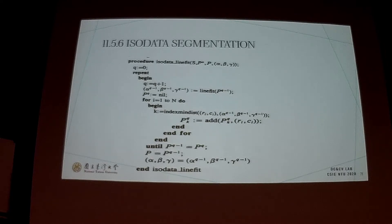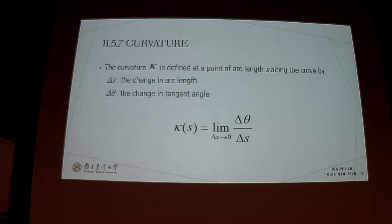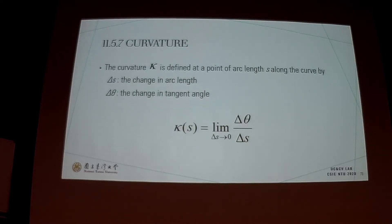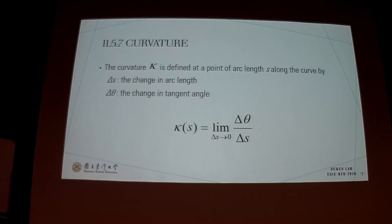The next part is about the curve vector. The curve vector k is defined at the point of arc length s along the curve by delta s and delta theta. Delta s indicates the change in arc length and delta theta the change in the tangent angle. Using this equation with delta theta and delta s we can get the curve vector location.